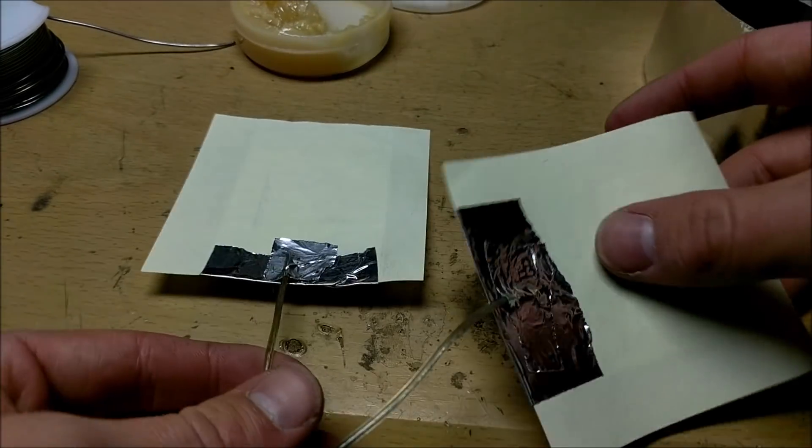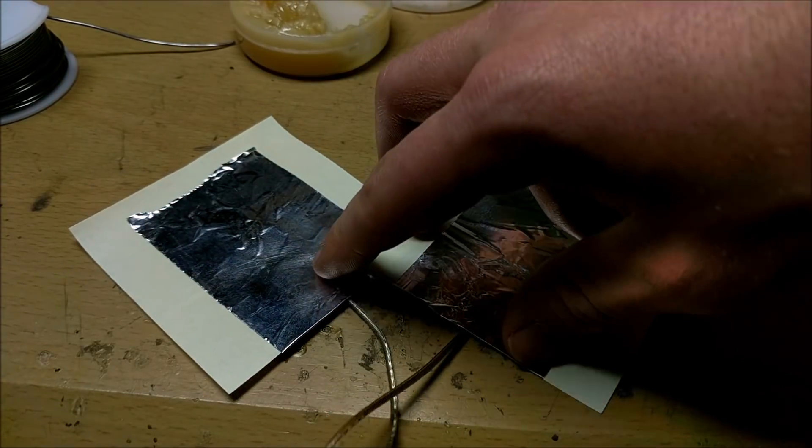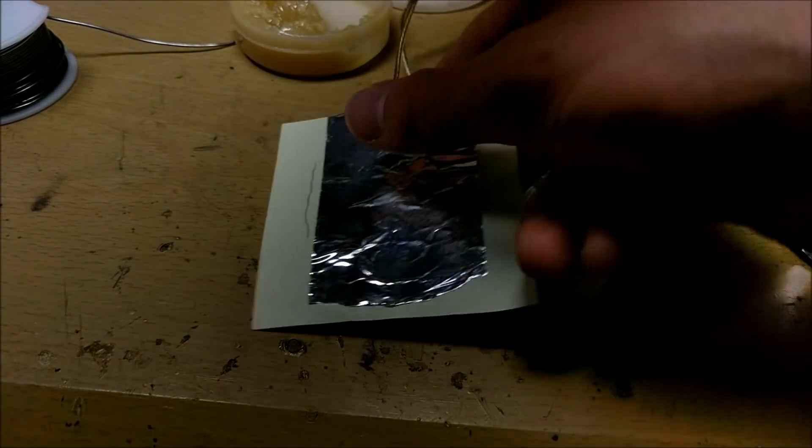And then now we have our two pieces of foil tape taped to pieces of paper, and they have wire going to them. This is going to be our final capacitor.